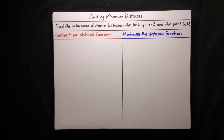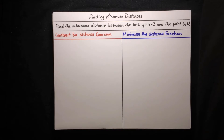In this video, I'm going to show you how to find the minimum distance between a point and a curve. Here we want to find the minimum distance between the line y equals x minus two and the point (1, 3). The way we're going to do that is we're first going to construct a function which represents the distance between that point and the line, and then minimize that distance function.